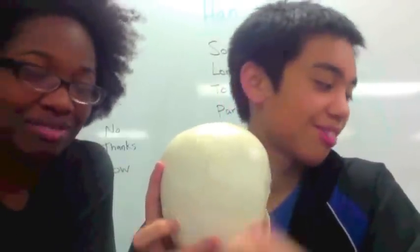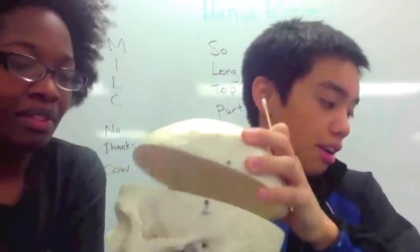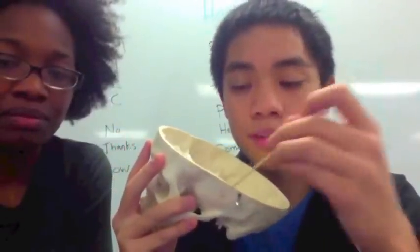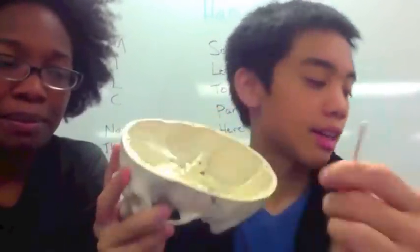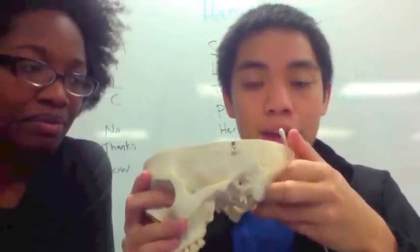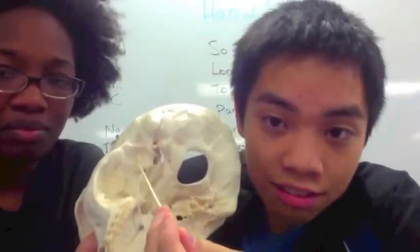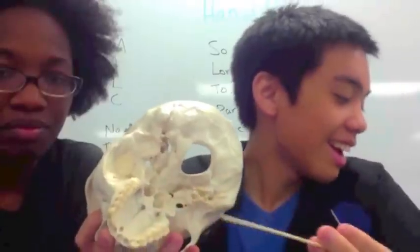We have the temporal bone, which is the side of the head portion. You have the mastoid process, which is the little bump right here in the back. You have the squamous portion, which is the flat area behind the temple. You have the zygomatic process right here, and the external auditory meatus — this hole right here — that's where your ear is.